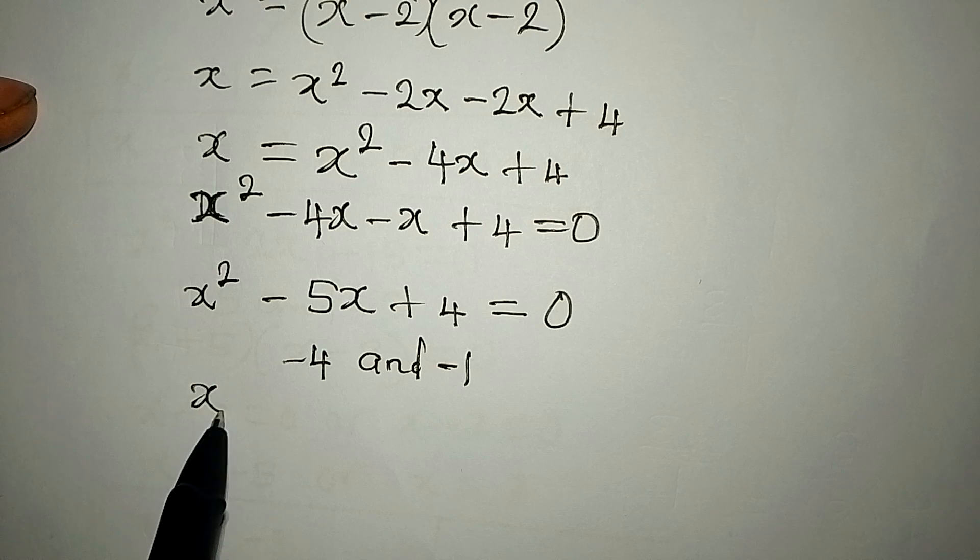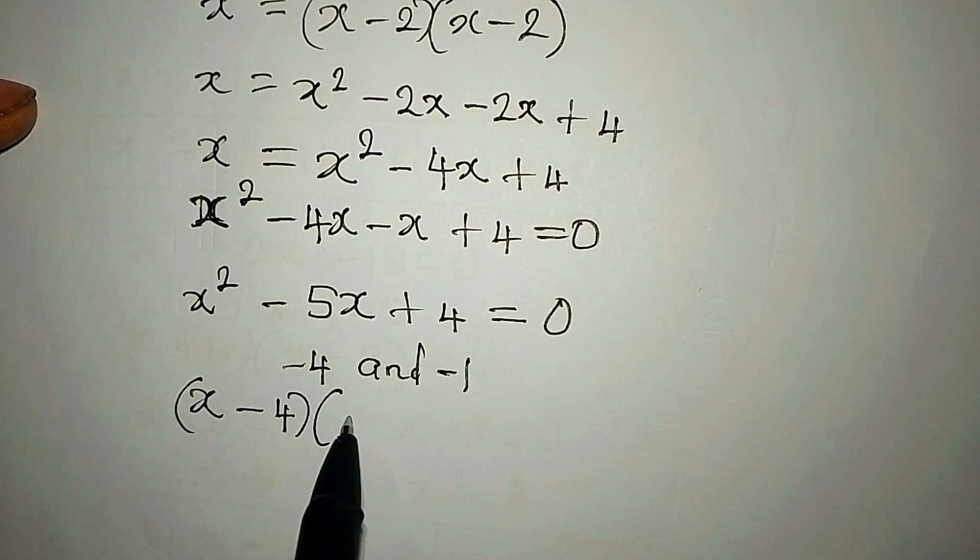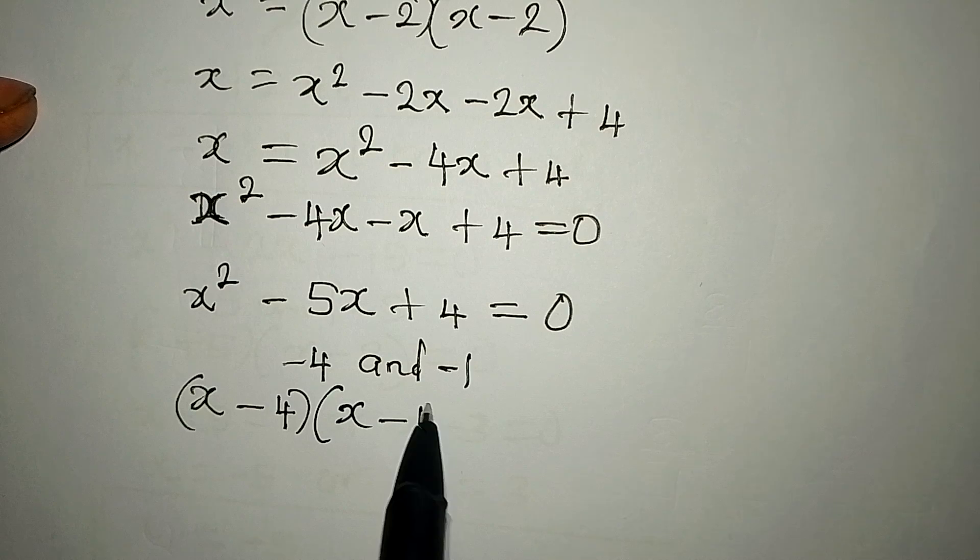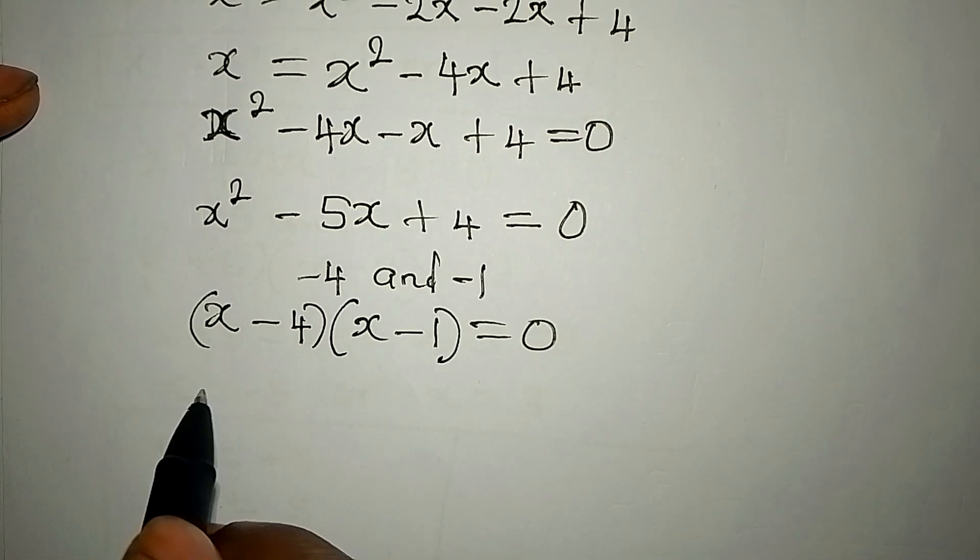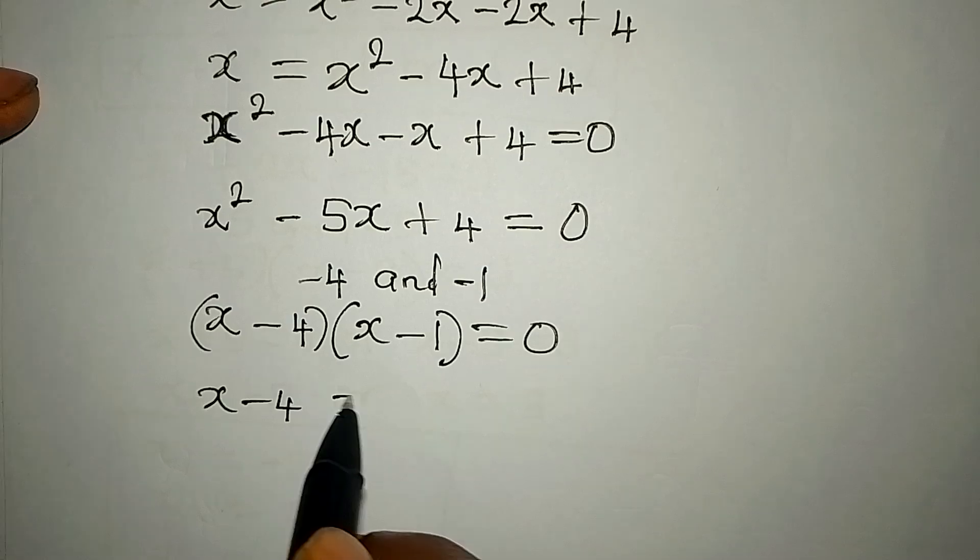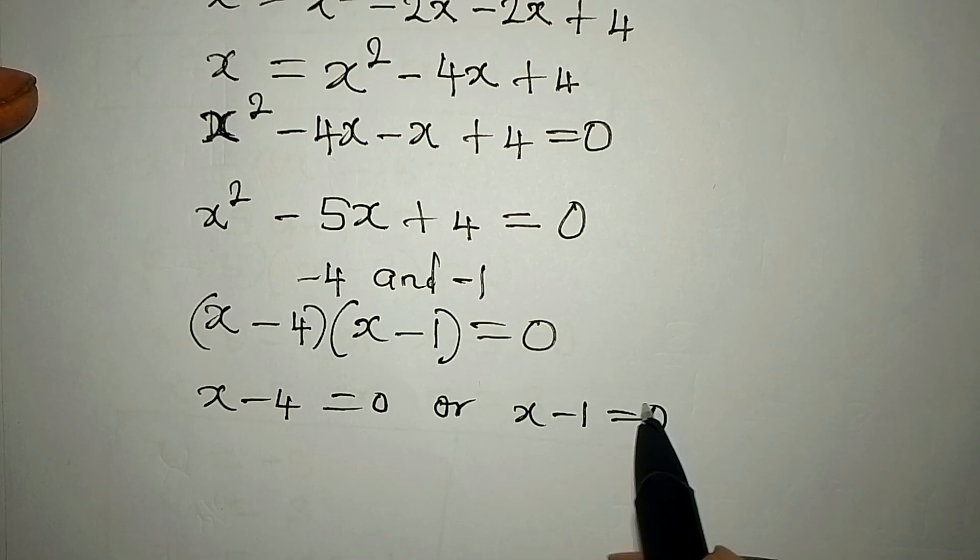Now this means that the factors will be x minus 4 and x minus 1 will equate to 0. So x minus 4 is equal to 0 or x minus 1 equals 0.